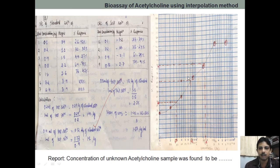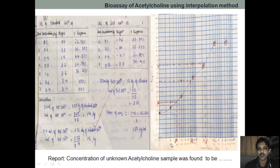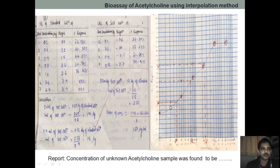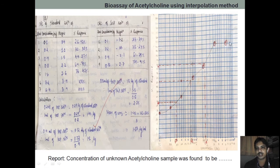Once we have this table, we need to draw the plot — the standard response curve graph. For example, 0.1 corresponds to 26%, 0.2 corresponds to 32%, 0.4 corresponds to 44%. Like that we are going to plot the graph, which is obtained from the standard response curve.